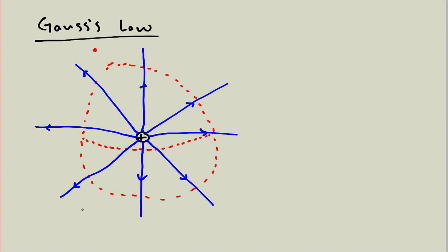An interesting observation: if I drew a different surface — suppose instead of that red surface I drew a green surface that was much smaller — I still have the exact same number of electric field lines passing through this green surface as I had for the red surface. And if I drew a really big surface somewhere far away, the same thing would happen. That is really the key observation for what we're going to talk about.